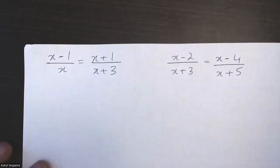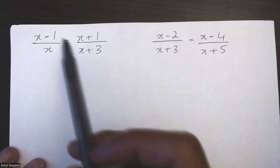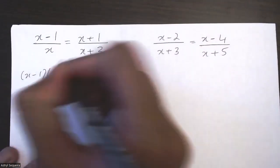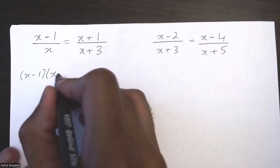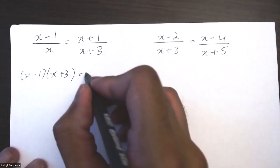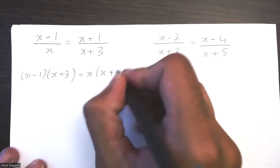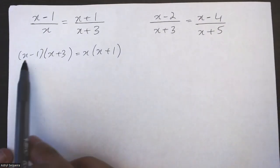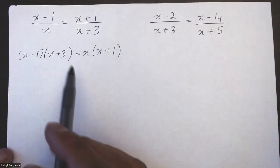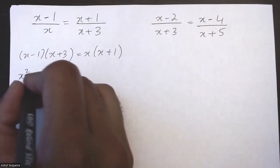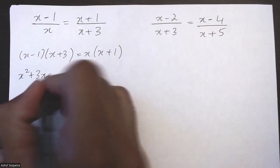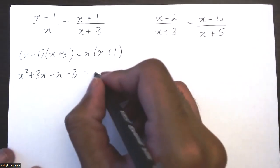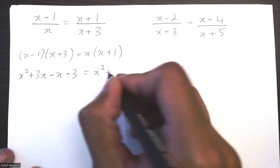For the third question, I'm going to cross multiply again, so I have (x - 1) times (x + 3) equals x times (x + 1). I need to expand these out now using FOIL. First times first gives x squared — you should know FOIL pretty well at this point — then minus x minus 3. On the right side, expanding gives x squared plus x.